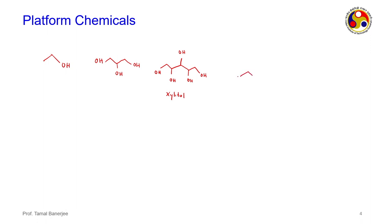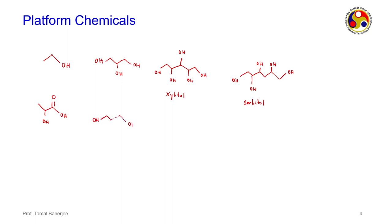Additional platform chemicals include lactic acid, which is widely used for making the biodegradable polymer polylactic acid — a replacement for most cutleries seen in the market. Lactic acid is a monomer for polylactic acid. Then there is 3-hydroxypropanoic acid.